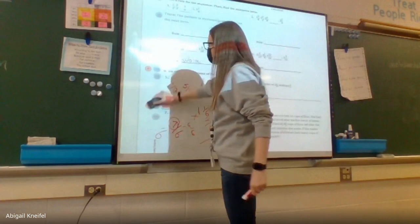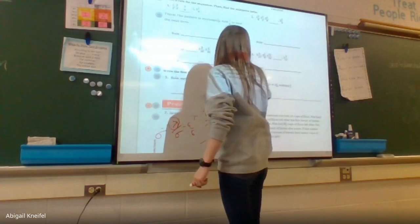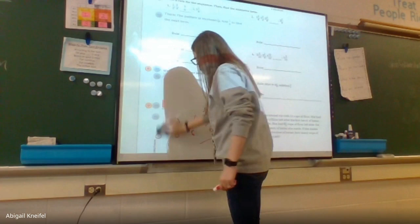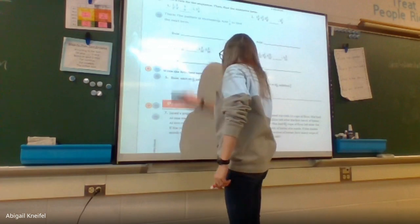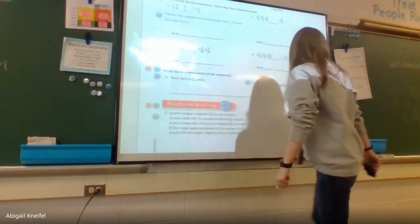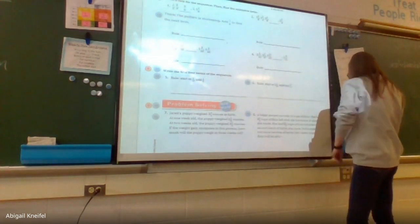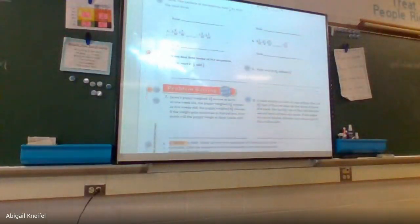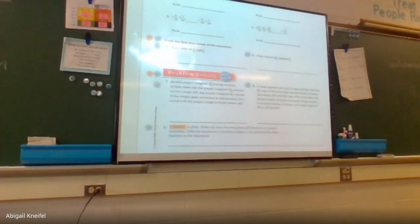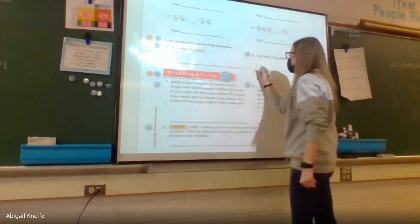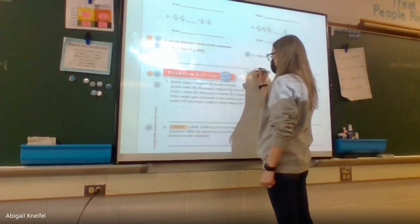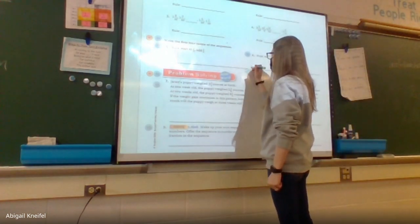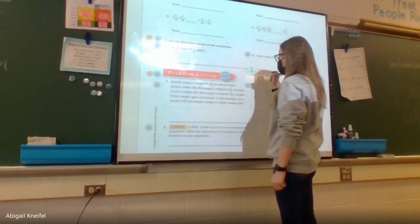Now we need to move down to number seven. Jared's puppy weighed three and three fourths ounces at birth. One week old, the puppy weighed five and one eighth ounces. At two weeks old, the puppy weighed six and a half ounces.